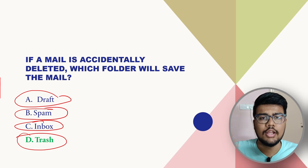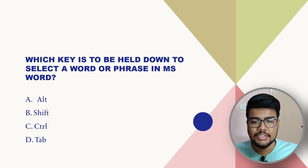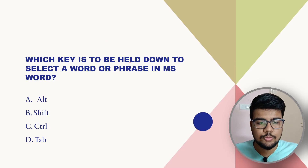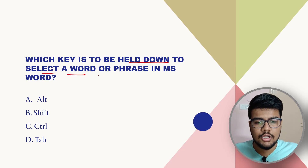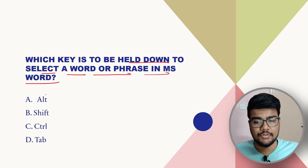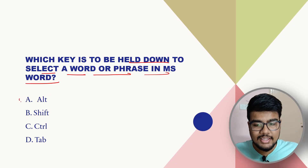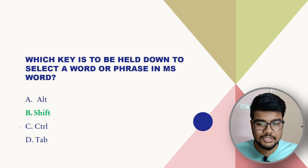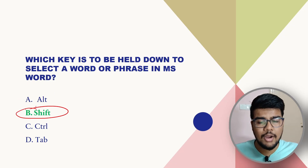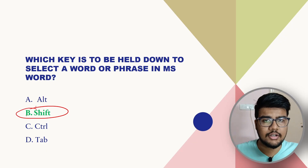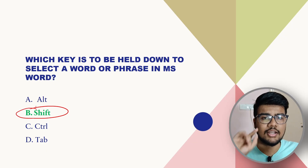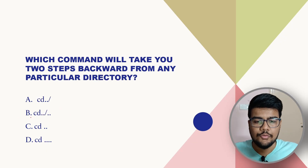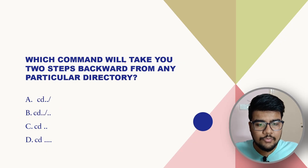Which key is to be held down to select a word or phrase in MS Office? The options are A, B, C, or D. The correct answer is Shift — mark it if you got it right.